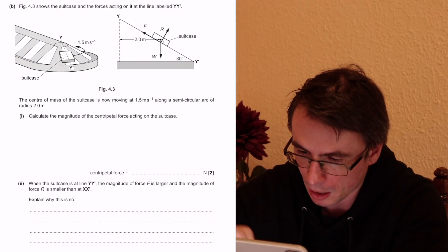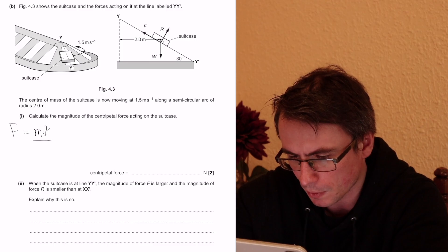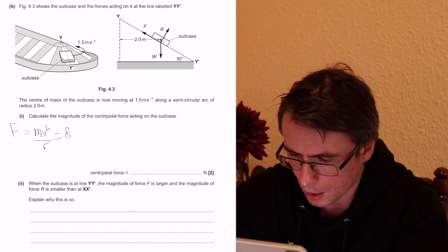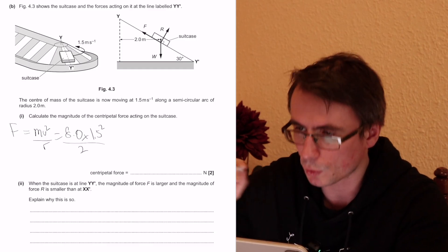We're given the mass which was 8. We're given the radius and the speed, so we can just use F is equal to mv squared over r. So what is this going to give me? 8.0 times 1.5 squared divided by the radius which is 2.